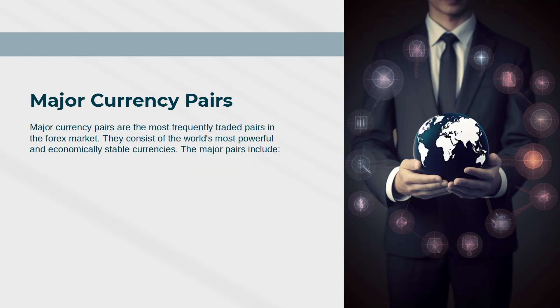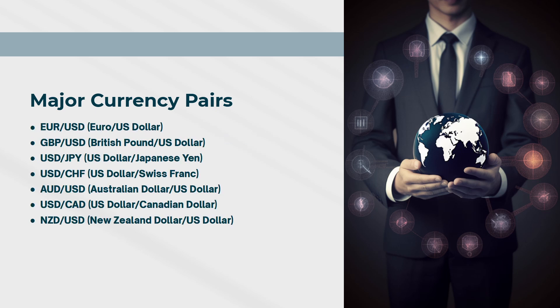Major Currency Pairs are the most frequently traded pairs in the forex market. They consist of the world's most powerful and economically stable currencies. The major pairs include: